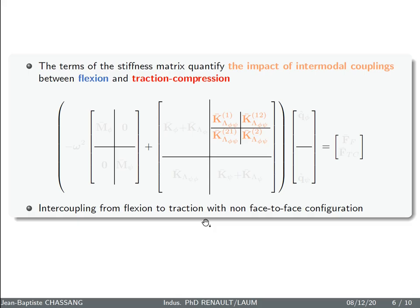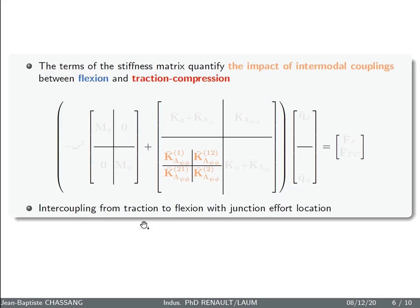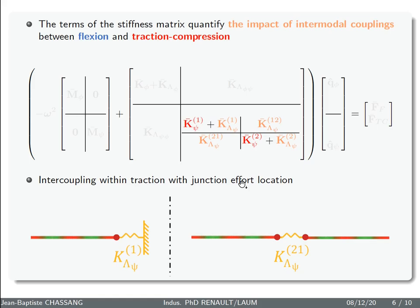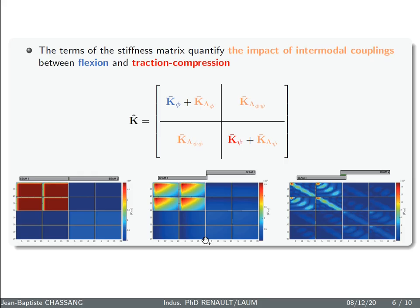So if we focus on each quarter, the first quarter is a definition of intercoupling in flexion with normal junction effort. If you focus on the second quarter, you study intercoupling from flexion to traction with the non-face-to-face configuration. In the third quarter, you study the intercoupling from traction to flexion with junction effort location. And the last quarter is intercoupling within traction with junction effort location, as you can see here.